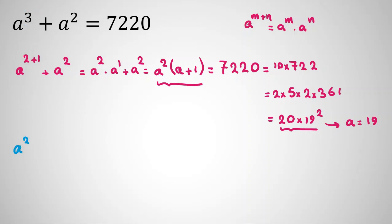We can say a equals 19 is one answer. And it helps us because the degree here is three and we can factorize. So we can say a cubed, so one answer is this. Let's see can we find any other answer. a cubed plus a squared minus 7220 equals zero.